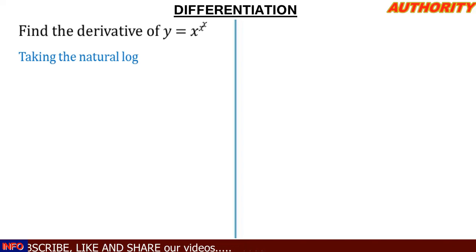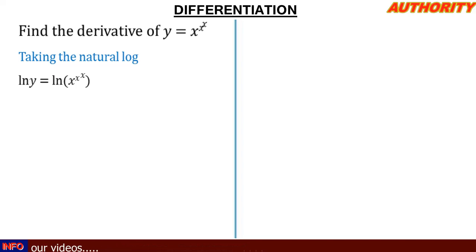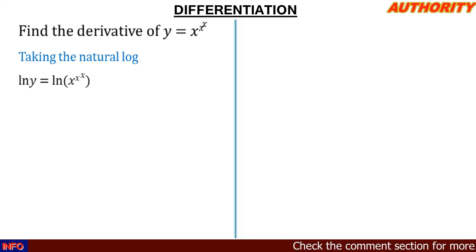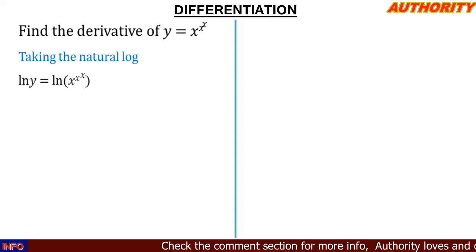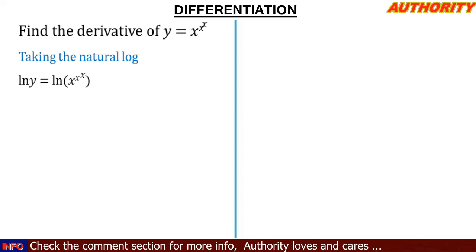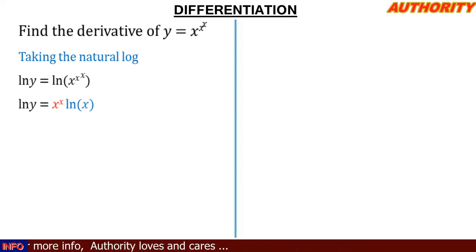Taking the natural log of both sides gives us ln(y) on the left hand side, and ln(x^(x^x)) on the right hand side. By the log power rule, we bring the exponent down in front. The base is x and the power is x^x, so we bring x^x in front of ln(x). We have: ln(y) = x^x · ln(x).